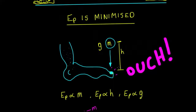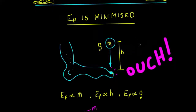We also know that if we drop an object from a certain height it's going to hurt, but if we increase the height it's going to hurt more. So the potential energy is directly proportional to the height — as the height goes up, the potential energy goes up. Now there's one other thing: if we weren't on Earth but on the Moon, and we dropped that same mass from the same height, it wouldn't hurt as much.